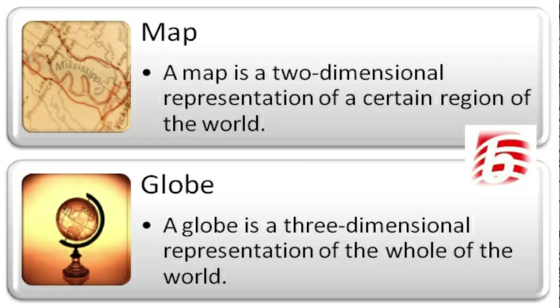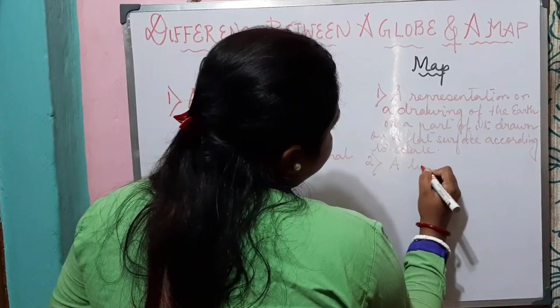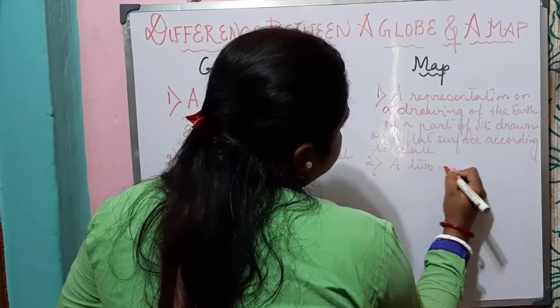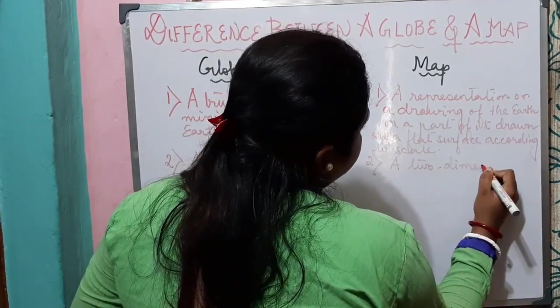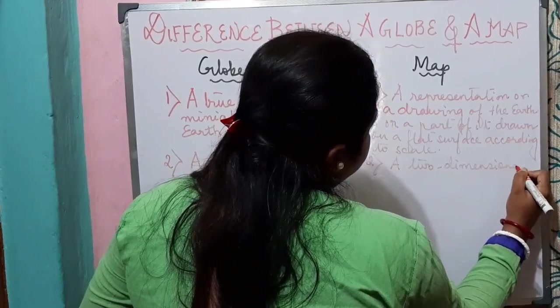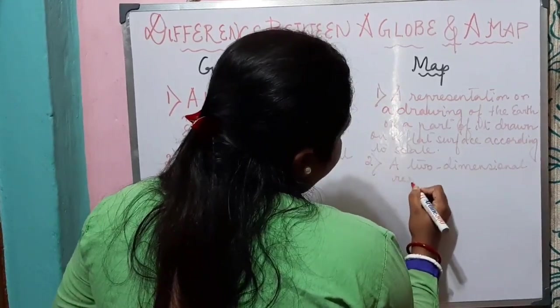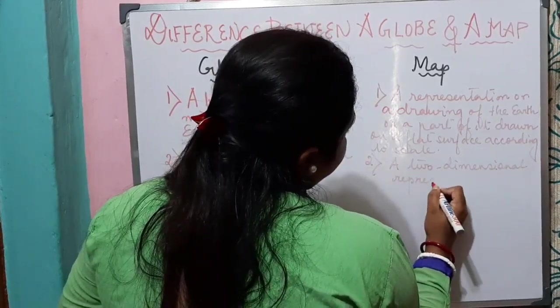The second difference is that a globe is a three-dimensional representation, whereas a map is a two-dimensional representation.